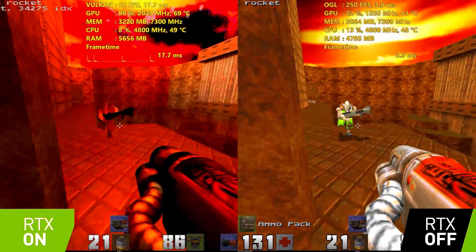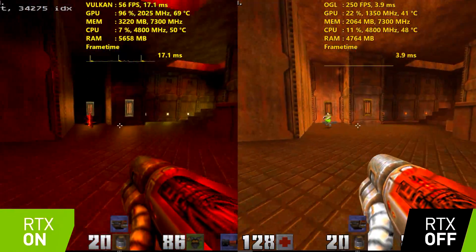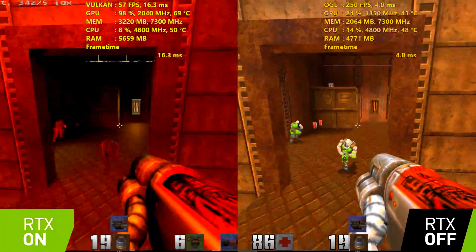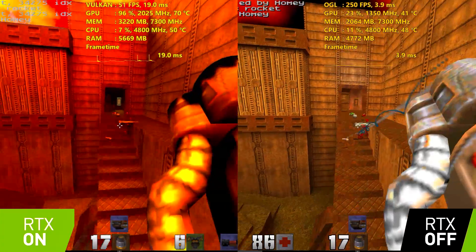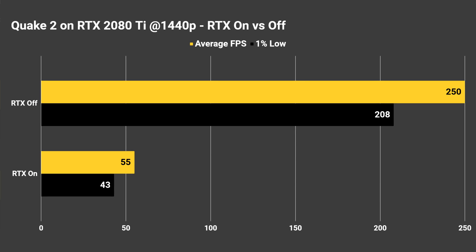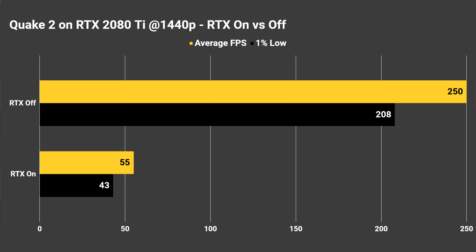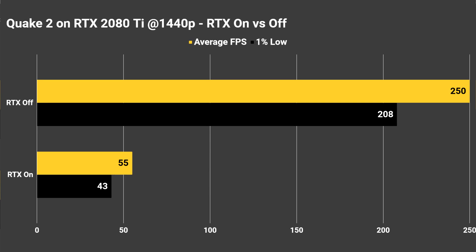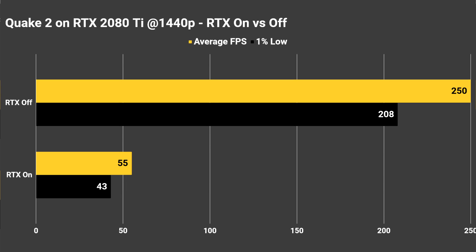Just to give you an idea of the performance: with RTX off, the average framerate was 250 FPS with a 1% low of 208. With RTX on, we got an average of 55 FPS and a 1% low of 43 — and that was at 1440p with the game otherwise completely maxed out. I didn't test every RTX card and every resolution; I just wanted to give you a baseline of the performance difference you could see with RTX on versus off, even with the $1,200 RTX 2080 Ti.